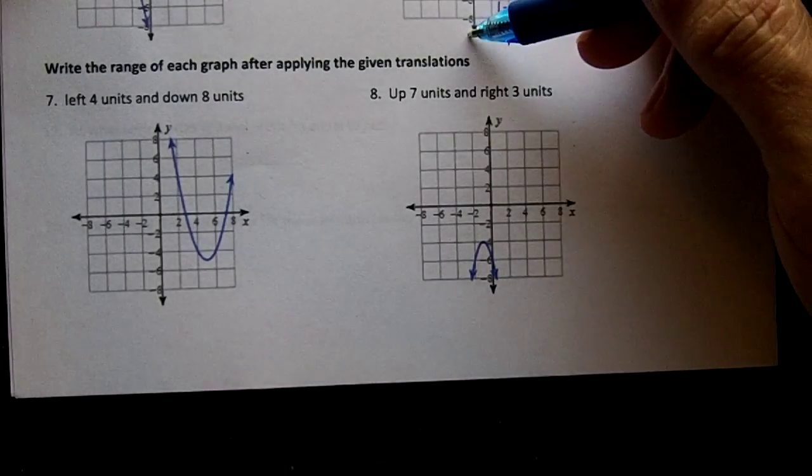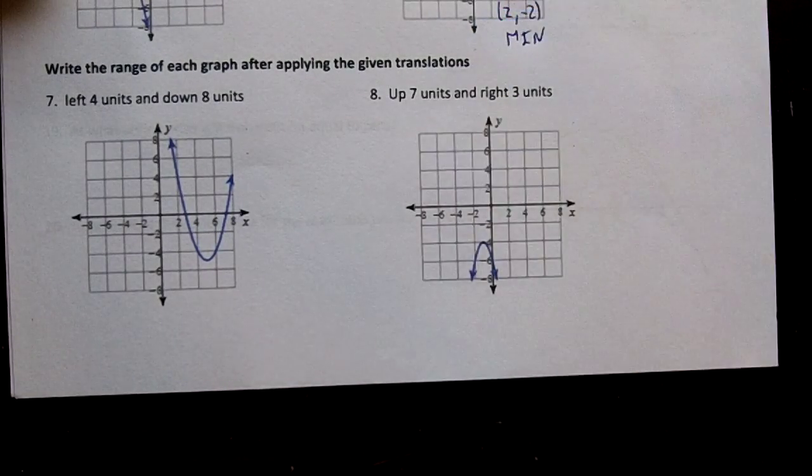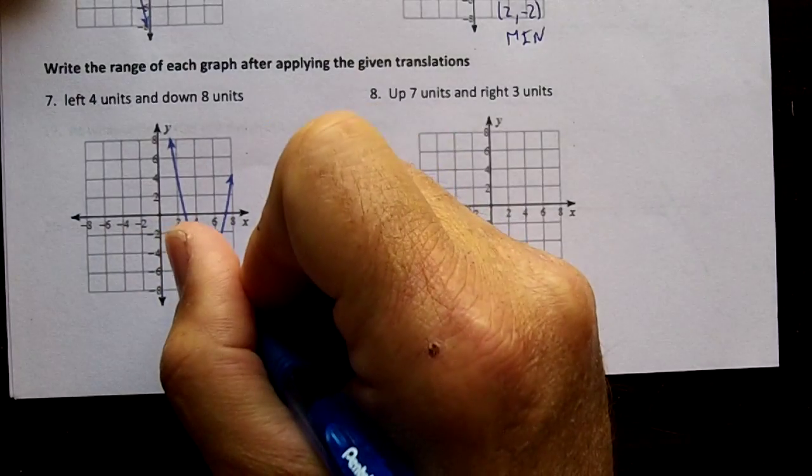Number seven, write the range of each graph after applying the given translations. So we're going to start with our vertex.